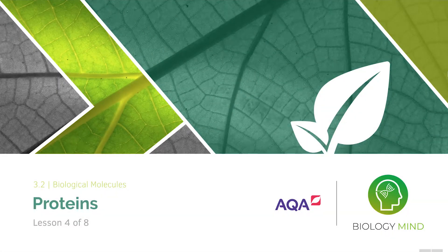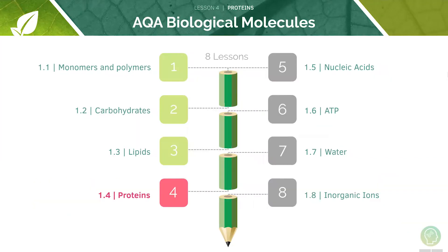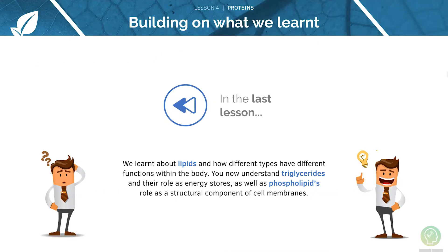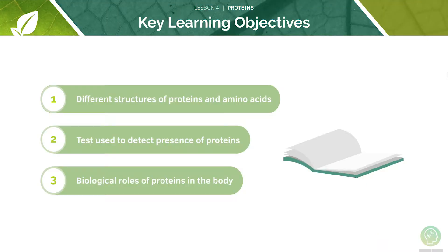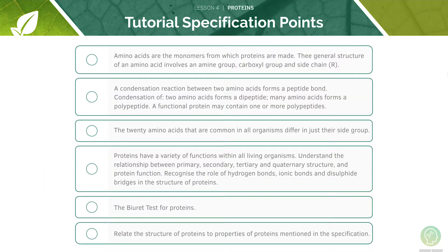Welcome to lesson four of eight in this tutorial covering proteins. This is the fourth video in our series of eight lessons on the topic of biological molecules. In the last lesson we looked at lipids and their different functions in the body. Here are the key learning objectives for today's lesson: the first is to look at the structures of proteins and how we can detect them, and we will then look at the biological roles of proteins in the body. Here are the AQA specification points for today's lesson.